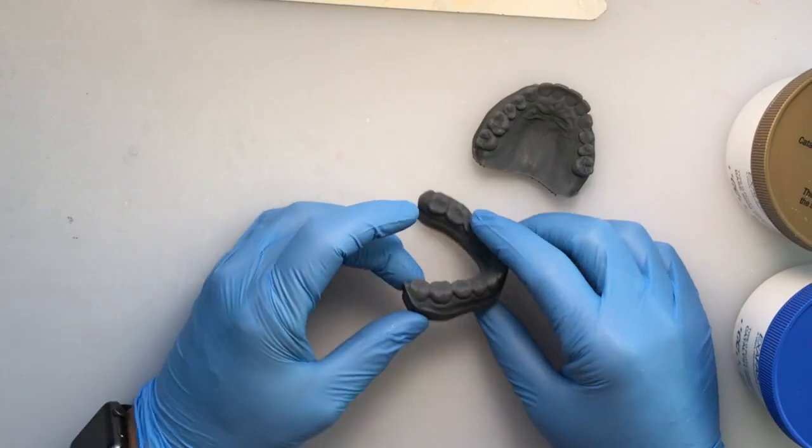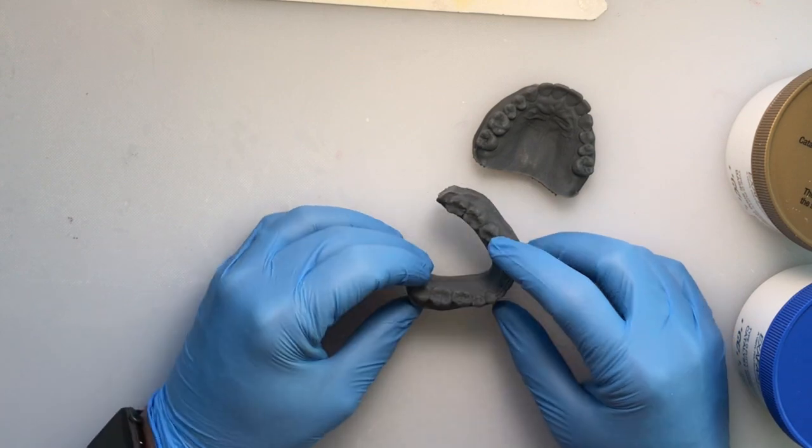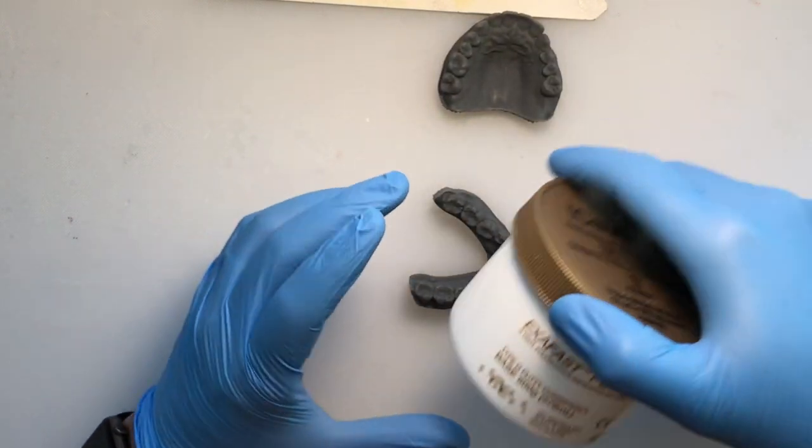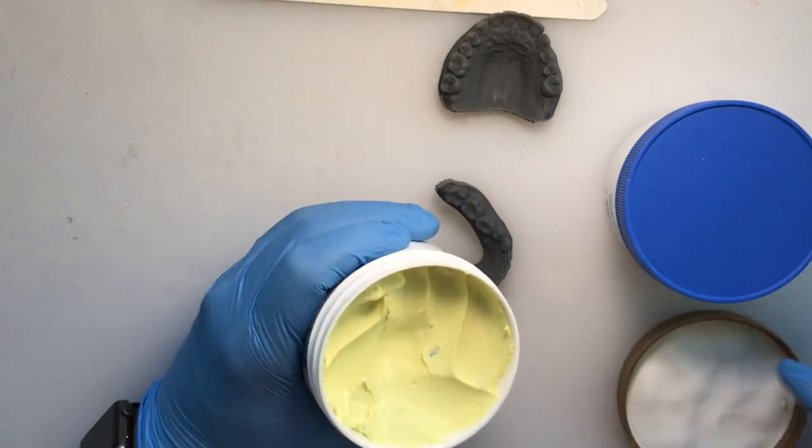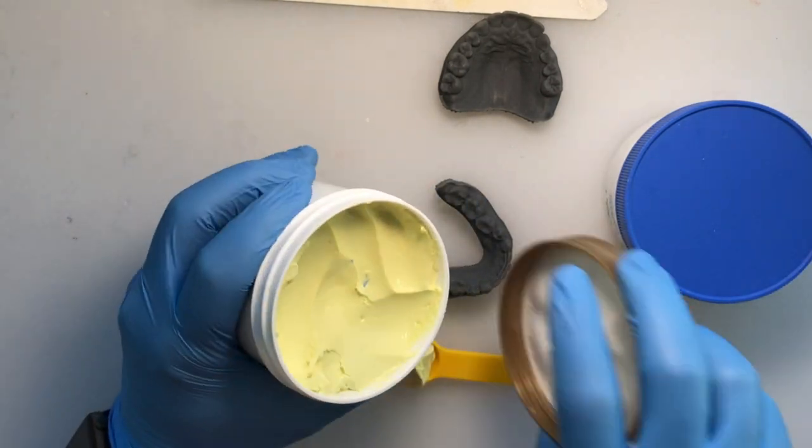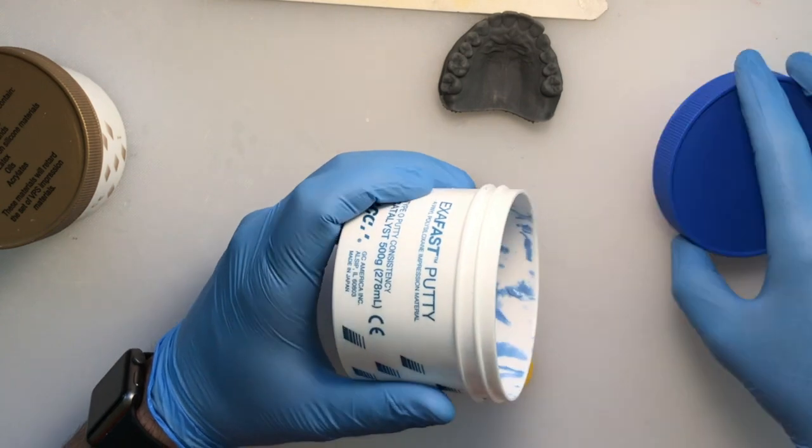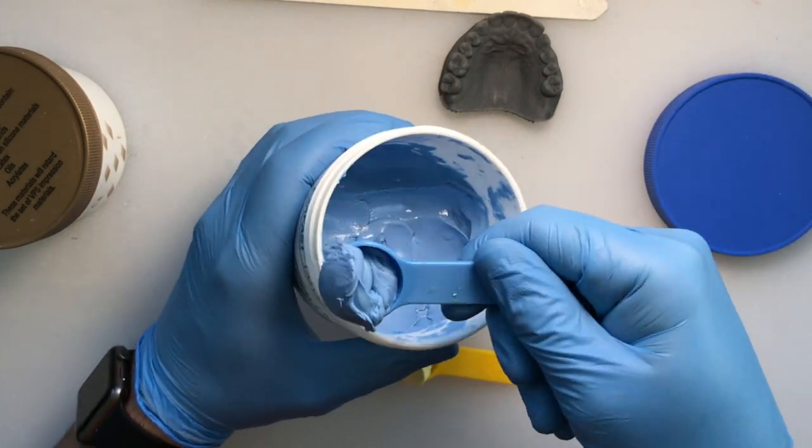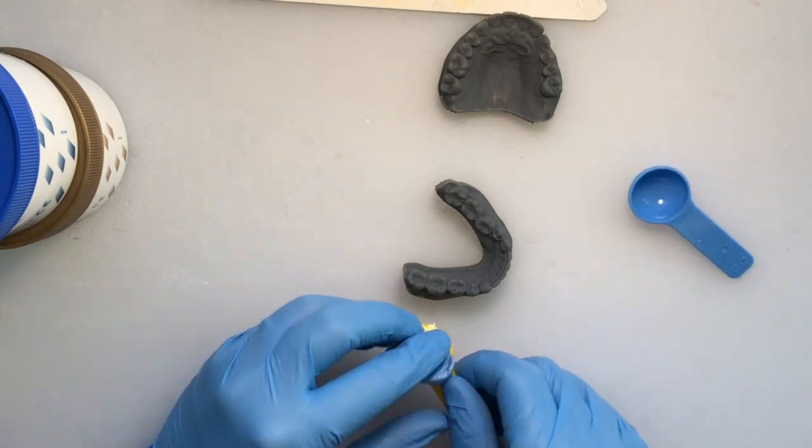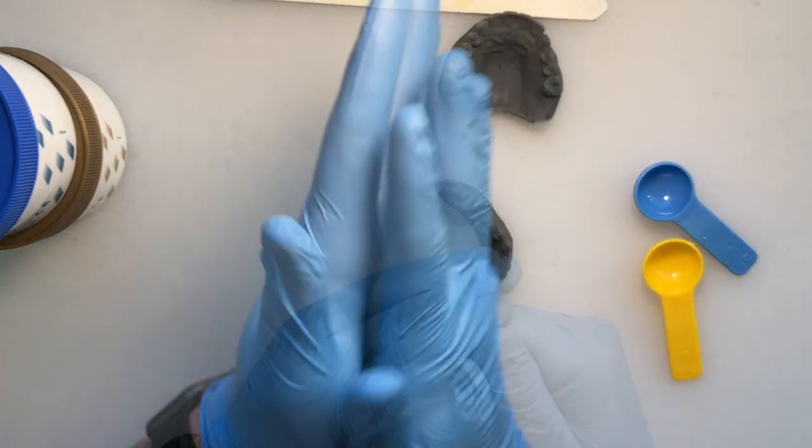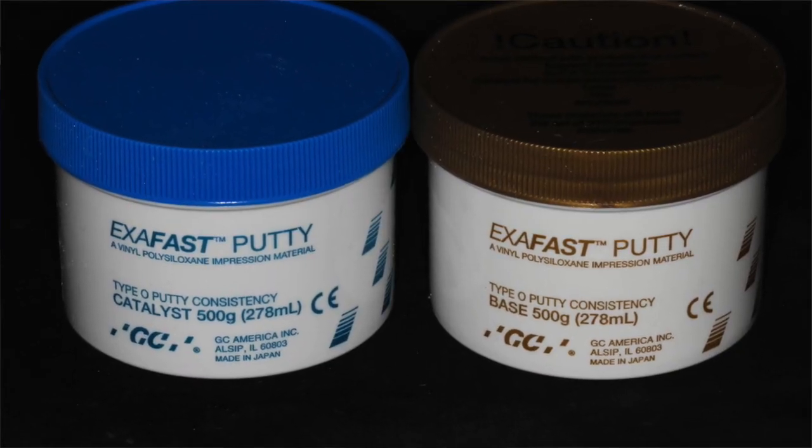I'm going to demonstrate using a model on the benchtop how to make a temporary crown using the GC America Temp Smart BIS-GMA material. You always need to make a matrix. I personally like the GC America ExaFast polyvinyl siloxane putty.